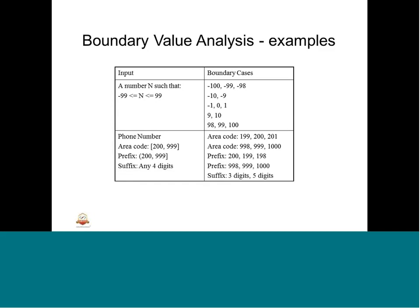The next example is about a phone number. We will have boundary cases: area code 199, 200, 201 at the lower boundary, and at the higher boundary 998, 999, and 1000. For the prefix, the lower boundary is 199, 198 and the higher boundary is 998, 999, 1000. We have to fix any 4 digits, so we should have 3 digits as input suffix and 5 digits as input suffix. These are all valid equivalence classes with boundary conditions which are allowed to test, so it is a very important aspect of boundary value analysis.